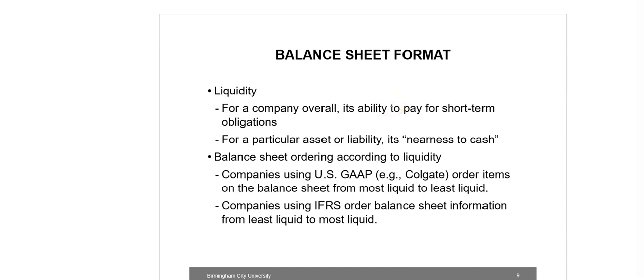Financial statements prepared in accordance with IFRS generally present balance sheet information in reverse order of liquidity compared with US GAAP. For example, using IFRS, assets are presented starting with non-current assets followed by current assets, and equity is presented first followed by non-current liabilities and then current liabilities. However, note that IFRS does not prescribe reverse ordering — International Accounting Standard 1 states that this standard does not prescribe the order or format in which an entity presents items.